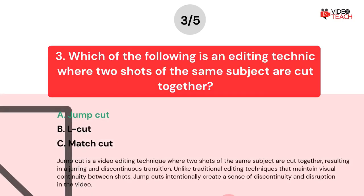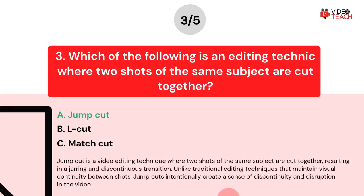The correct answer is A. Jump cut is a video editing technique where two shots of the same subject are cut together, resulting in a jarring and discontinuous transition. Unlike traditional editing techniques that maintain visual continuity between shots, jump cuts intentionally create a sense of discontinuity and disruption in the video.